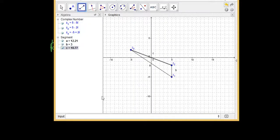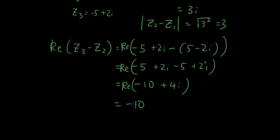So that means, if I'm travelling from z2 to z3, the length is 10 units, because -10 means 10 units in the left direction. Okay, so the answer is just 10.